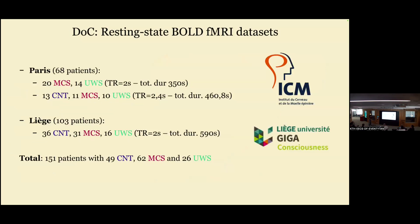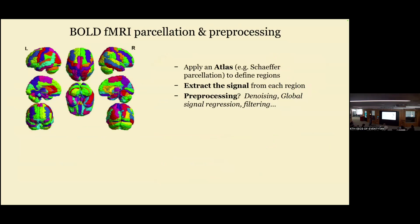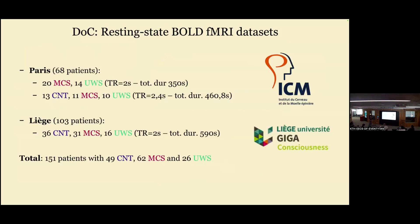The dataset: I work with Hako's group and have fMRI patients from there, plus some from the Giga Consciousness Group at the University of Liège — about 140 patients in total after exclusions. They're divided into three groups: controls in blue, the minimally conscious state group in dark red, and the unresponsive wakefulness state in green.